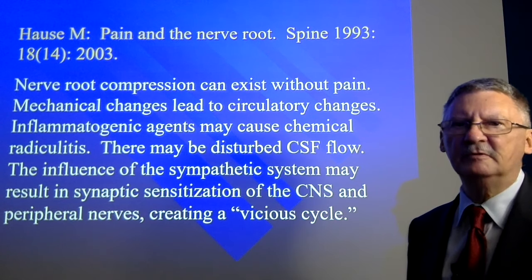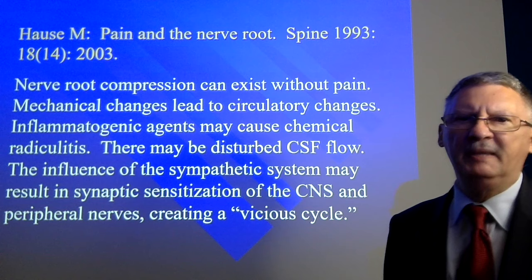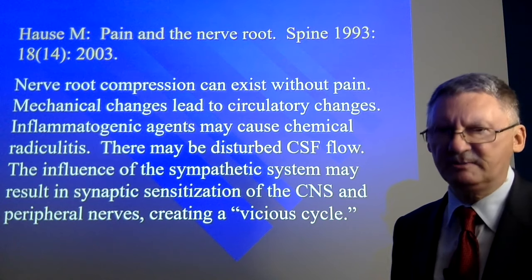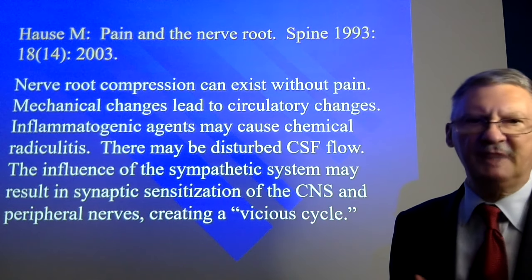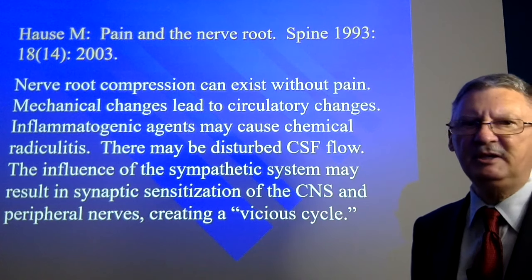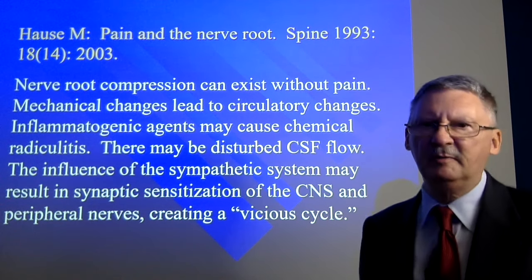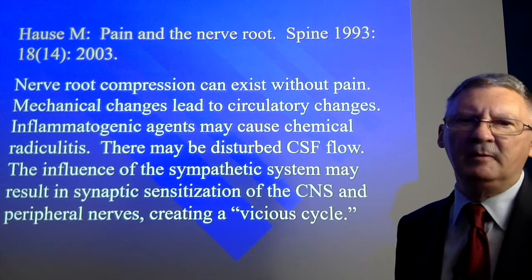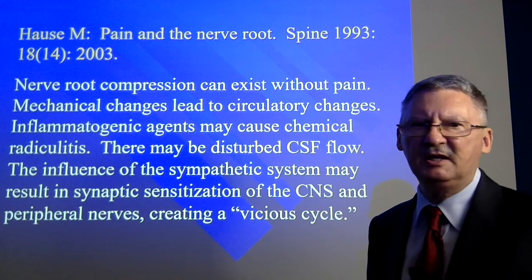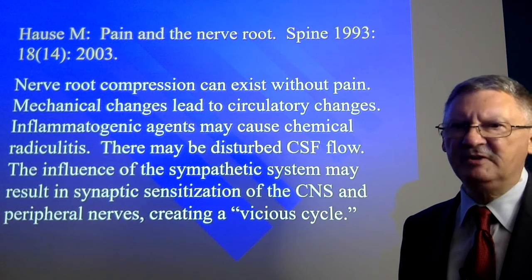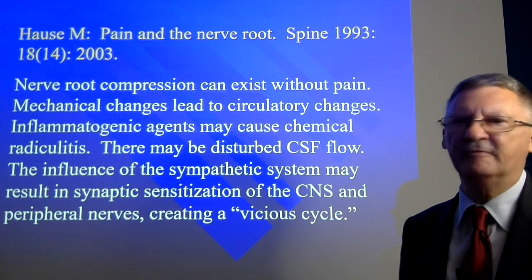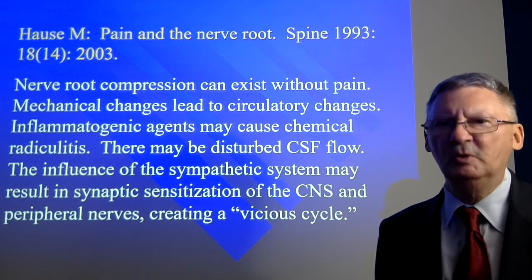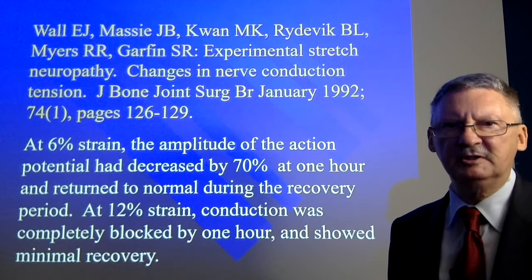House also noted that nerve root compression can exist without pain. Mechanical changes lead to circulatory changes. Another aspect is chemical involvement — inflammatogenic agents such as histamine or substance P may cause chemical radiculitis. There may also be disturbed cerebrospinal fluid flow, and the influence of the sympathetic system may result in synaptic sensitization of the CNS and peripheral nerves, creating a vicious cycle. We see an entire constellation of functional and pathological changes that occur with spinal degeneration, which can initially be triggered by vertebral subluxation.